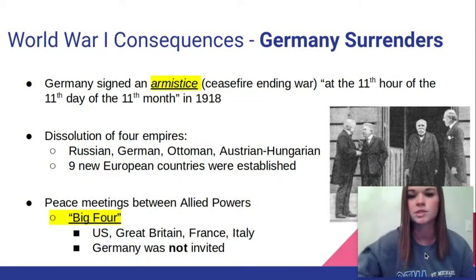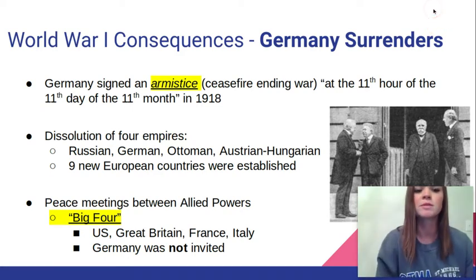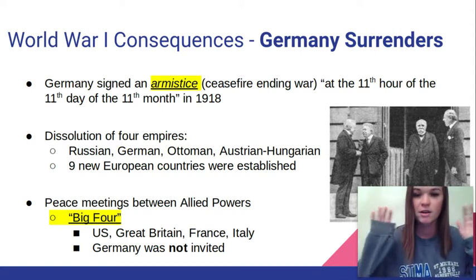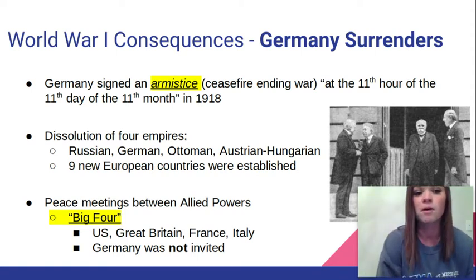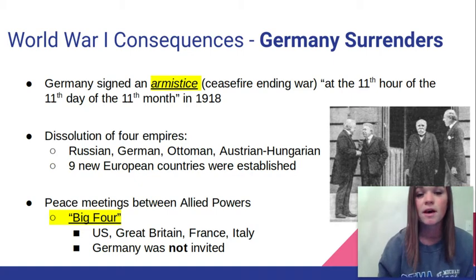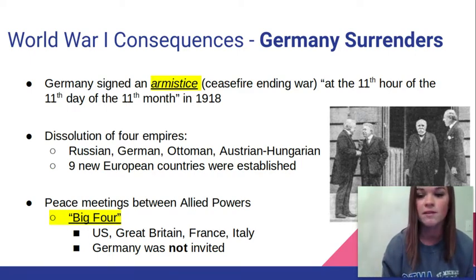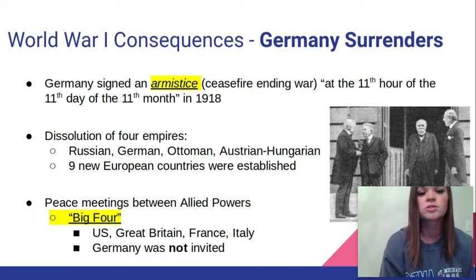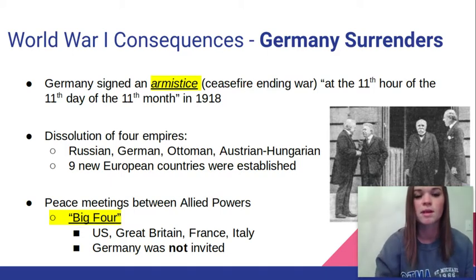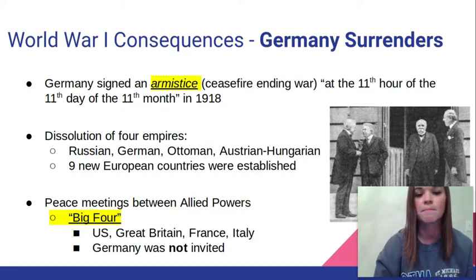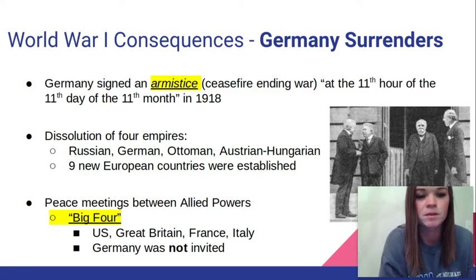World War I consequences continued — Germany surrenders. Germany signed an armistice, which means a cease-fire ending the war, at the 11th hour of the 11th day of the 11th month in 1918. Fun fact: that is why we have Veterans Day, and we celebrate that as a nation on November 11th, because that was when Germany surrendered during the Great War. It also led, once Germany surrendered, to a dissolution of four empires. Those four empires — the Russian, German, Ottoman, and Austro-Hungarian — were no more.